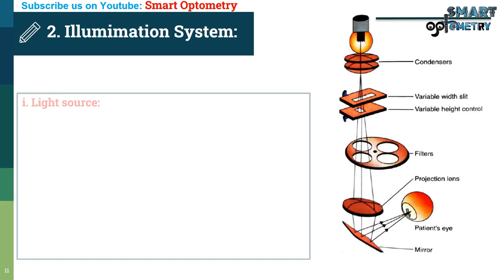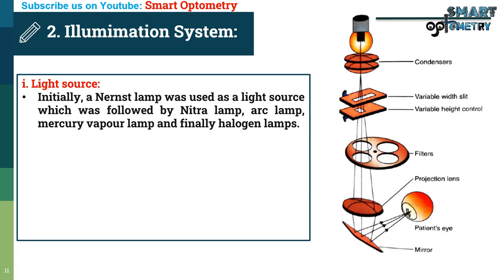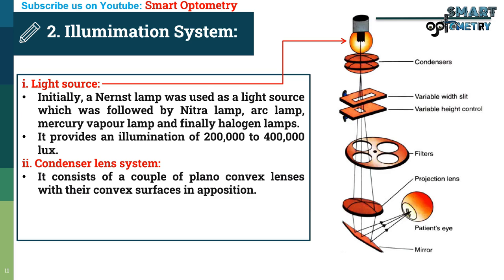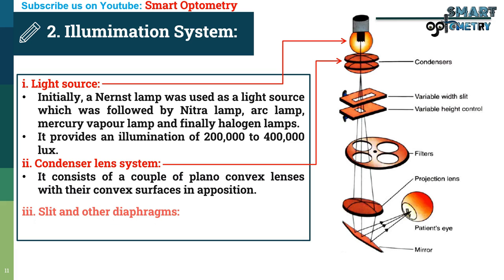Light Source: Initially a nernst lamp was used as a light source, which was followed by nitro lamp, arc lamp, mercury vapor lamp, and finally halogen lamps. It provides an illumination of 200,000 to 400,000 lux. In this figure you can see the halogen lamp as a light source in the slit lamp. Condenser Lens System: It consists of a couple of plano-convex lenses with their convex surfaces in opposition. In this figure you can see the two condenser lenses.